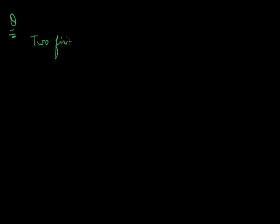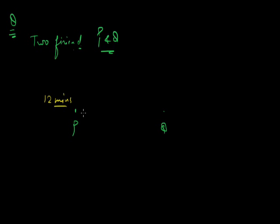Now let's take an example. Two friends P and Q are at some distance. P fired a bullet at an interval of 12 minutes — two bullets were fired at an interval of 12 minutes. And Q heard the sound at an interval of 11.5 minutes. So P fired two bullets with an interval of 12 minutes, and Q heard the same sounds at an interval of 11.5 minutes.